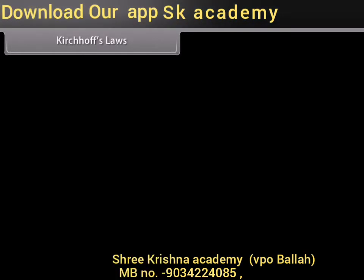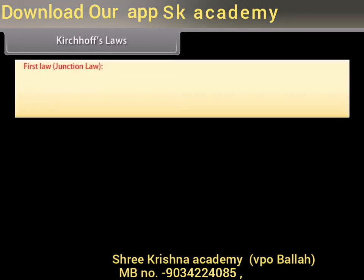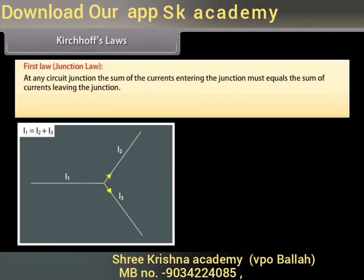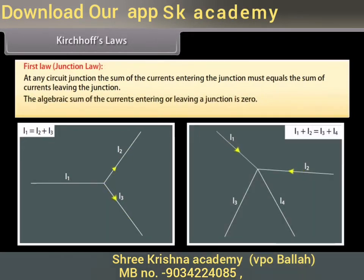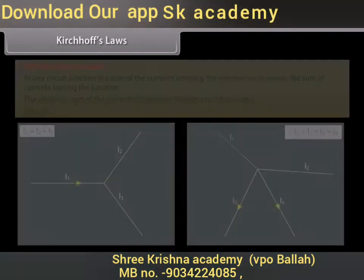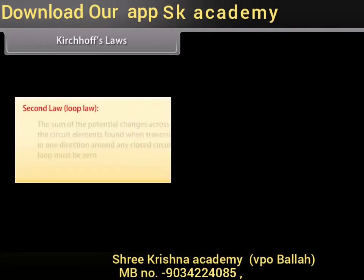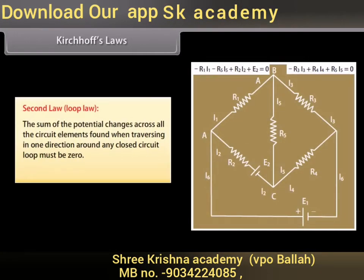Kirchhoff's Laws: First law states that at any circuit junction, the sum of currents entering the junction must equal the sum of currents leaving the junction — the algebraic sum of currents is zero (ΣI = 0). Second law states that the sum of potential changes across all circuit elements when traversing in one direction around any closed loop must be zero (ΣΔV = 0).